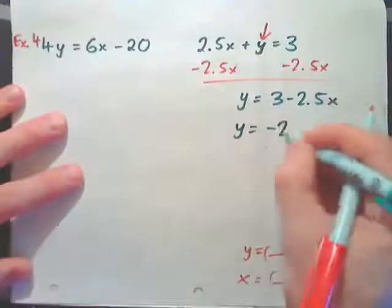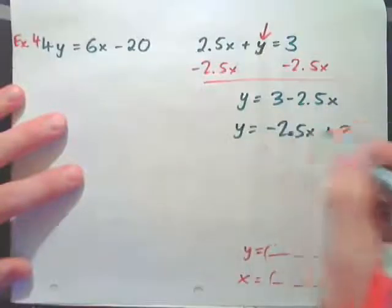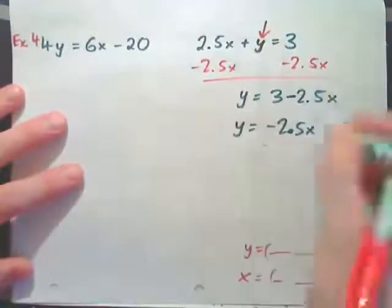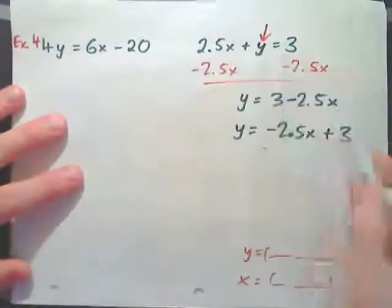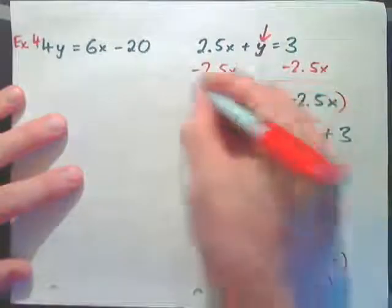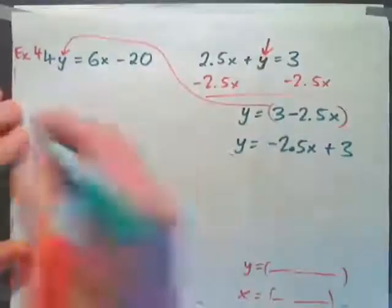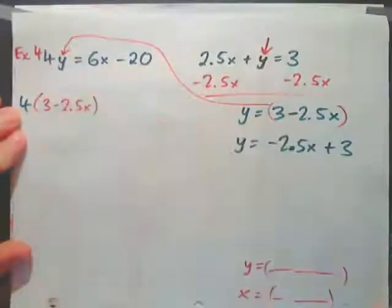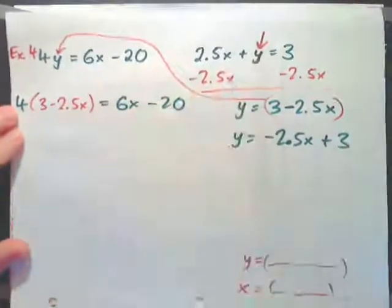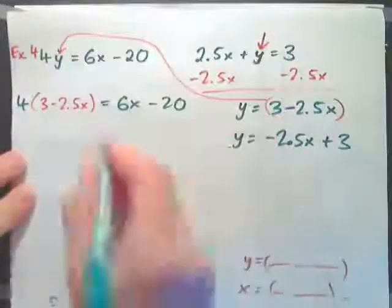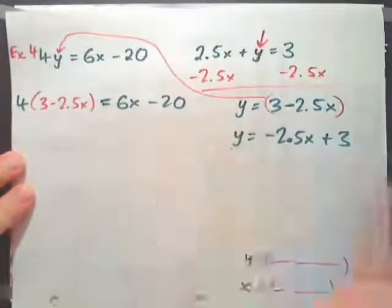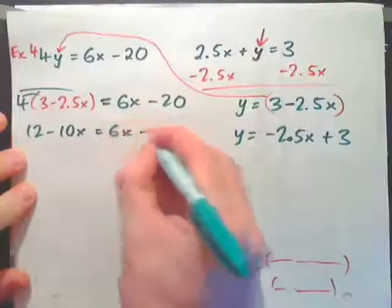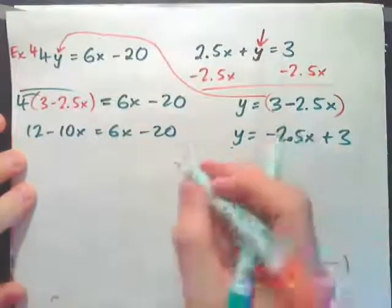We can also write this as y equals negative 2.5x plus 3 — same thing. Now we substitute this expression in for y in the first equation: 4 times (3 minus 2.5x) equals 6x minus 20. Expanding: 12 minus 10x equals 6x minus 20.